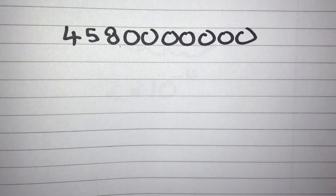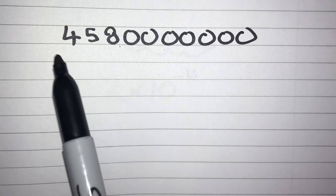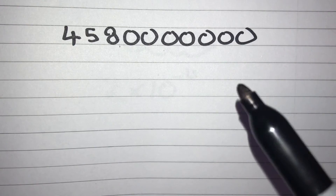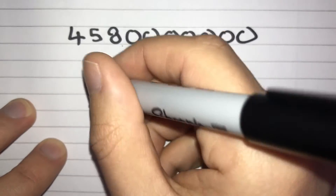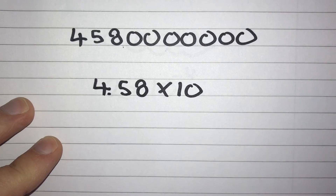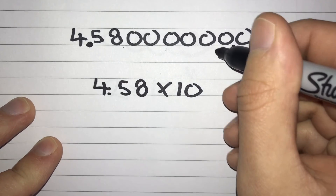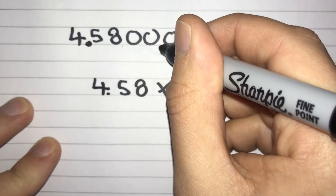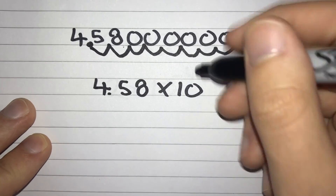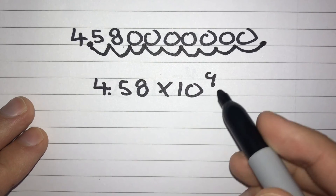Here are a couple of examples for you to have a go at. Pause the video for a moment — we've got a really big number to write in standard form. First we find our number between 1 and 10 by putting our decimal point after our first significant figure, which is after the 4, giving us 4.58. Our decimal point started at the end and has moved: 1, 2, 3, 4, 5, 6, 7, 8, 9 spaces. Because it's a big number we need a positive power, so the answer is 4.58 times 10 to the power of 9.